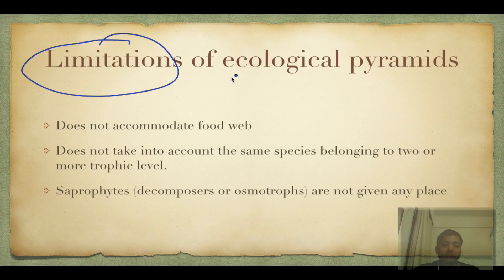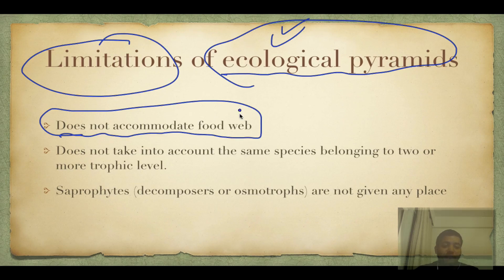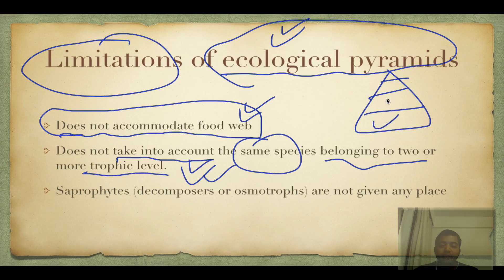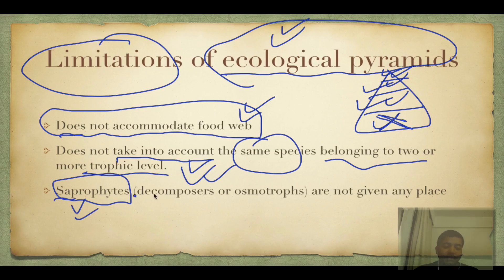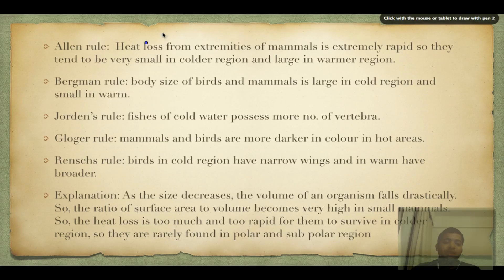There are certain limitations of ecological pyramids. It does not accommodate the food web. It does not take into account the same species belonging to two or more trophic levels — for example, man as an omnivore could be placed at multiple levels. Saprophytes — also called decomposers or osmotrophs — are not given any place, so bacteria have no position in these pyramids.